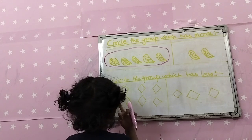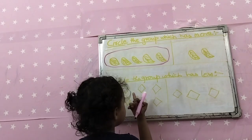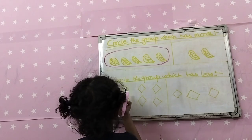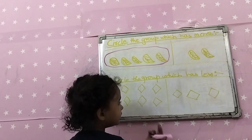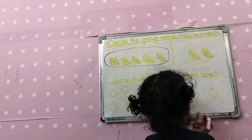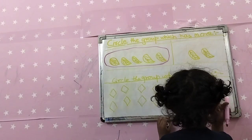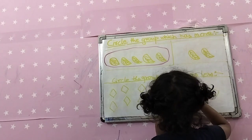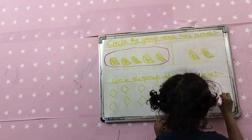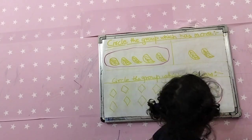1, 2, 3, 4, 5, 6, 7, 8. 1, 2, 3. This is 3. We will do a small circle.